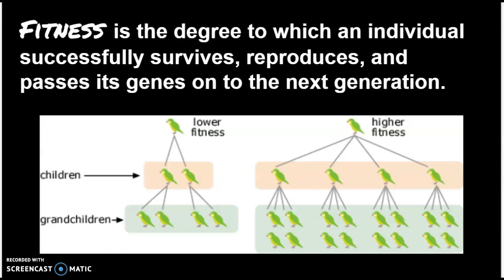We also have this idea of fitness — in the context of evolution, fitness means how successful is an individual at passing their genes on to future generations. Looking at an example: we have two birds — the lower fitness one has only two offspring and four grandchildren, whereas the one on the right has four children that survive and they each have four. We say the one on the right has higher fitness. Both of them survive and reproduce, but the one on the right reproduces more and passes on more genes, so it is better suited to its environment.